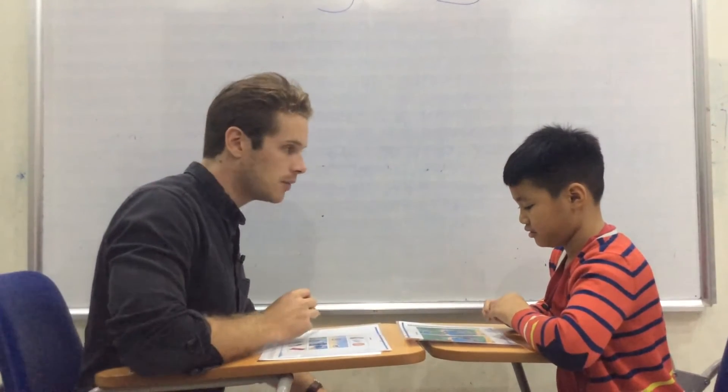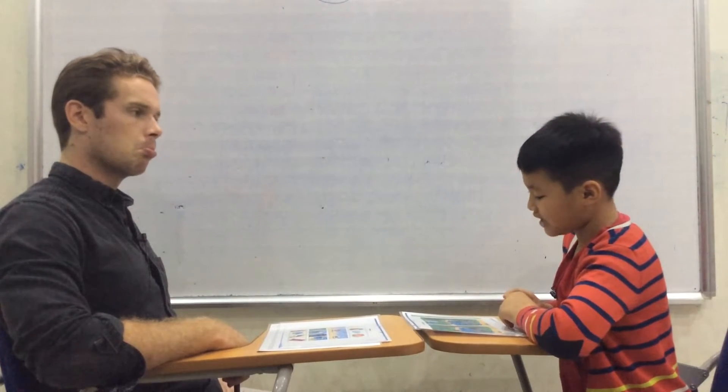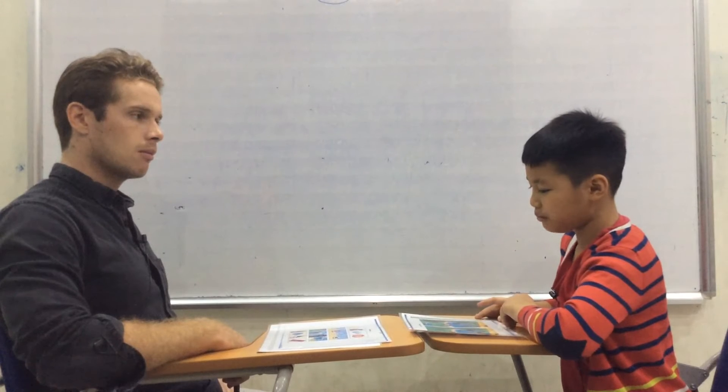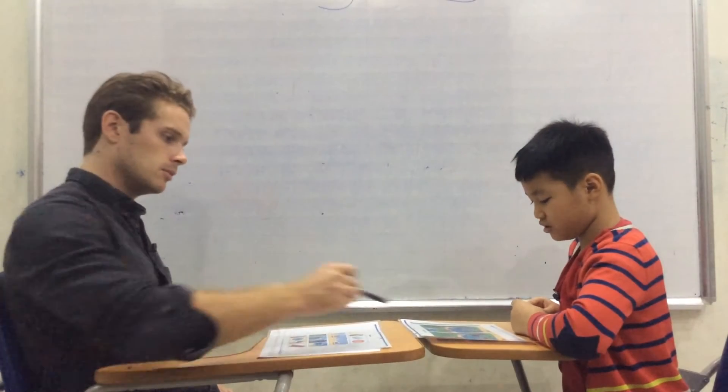Interviewer: So first we need to find the difference between picture one and picture two. I'll give an example. You can find some others. In picture one, the bear is color black, because in picture two, the bear is color brown. There are four ducks in picture one, but in picture two there are five ducks.